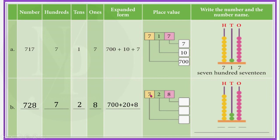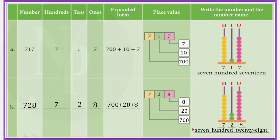The place value of 7 is 700. Place value of 2 is 20. And the place value of 8 is 8 since it is in the ones place. Looking at the abacus, how many beads do we have on the hundreds place rod? 1, 2, 3, 4, 5, 6, 7. We should write 7. How many beads are there on the tens place rod? Yes, there are 2 beads, so we will write 2 here. And on the ones place rod? 1, 2, 3, 4, 5, 6, 7, 8. So we should write 8 here. The number name of this numeral is 728. We should write the number name here.